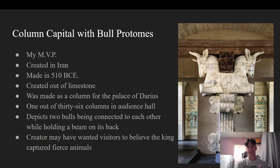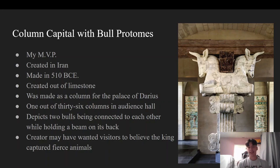This one depicts two bulls locked together and connected to the same body, while laying down and holding up a beam on its back. There is a tale according to the textbook that the creator may have wanted visitors to believe that the king captured these animals because they are very fierce and symbolize a lot of power, and they wanted visitors to think that he got them to hold up the castle because of how powerful this king is.